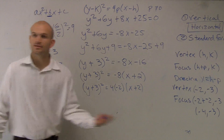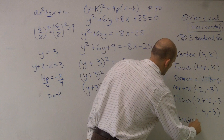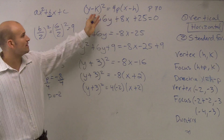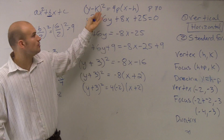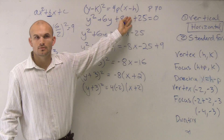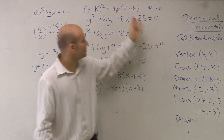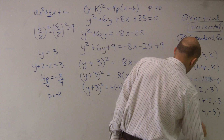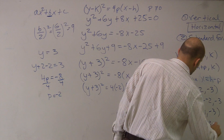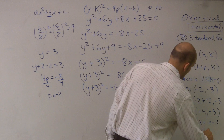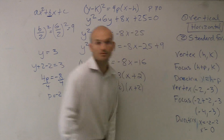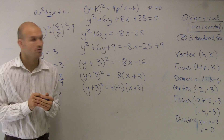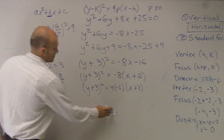My directrix is the subtraction form: x equals h minus p, which is x equals negative 2 minus negative 2, which gives x equals 0. Remember, we have a y squared, so this is a horizontal parabola and the directrix is an x equation — it will actually fall on the y-axis.